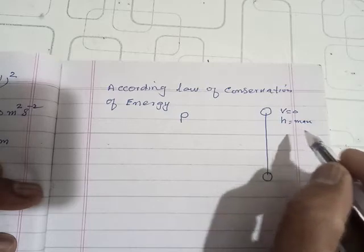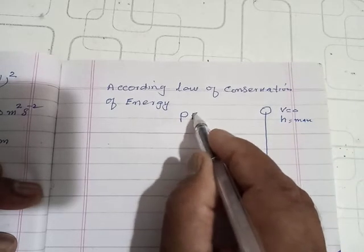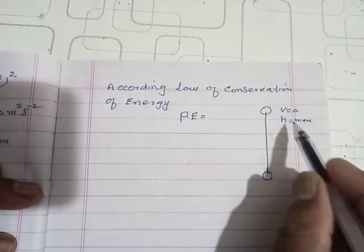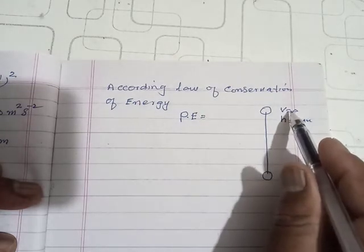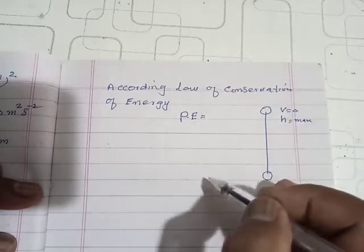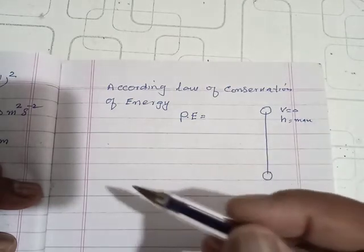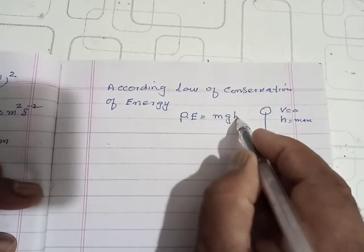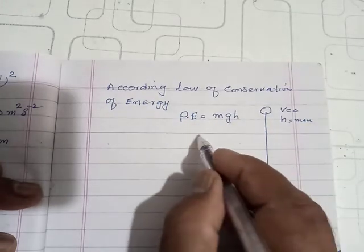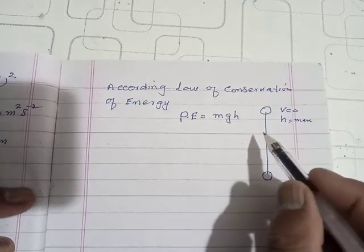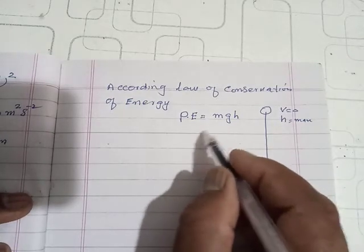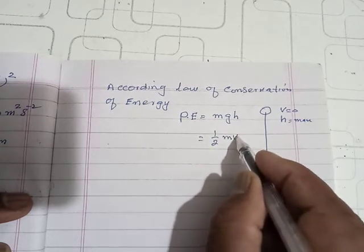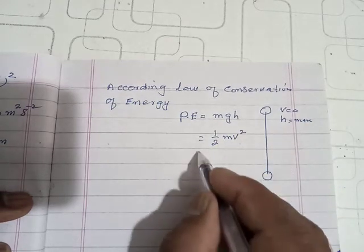Total potential energy at maximum height, kinetic energy is zero because velocity is zero, and all the kinetic energy will convert to potential energy which will be MGH. This is equivalent to half MV square.